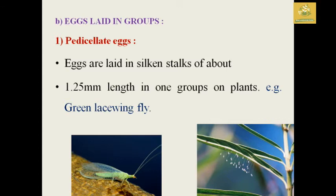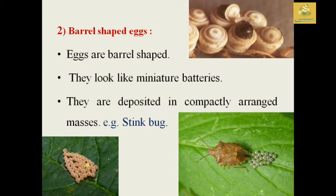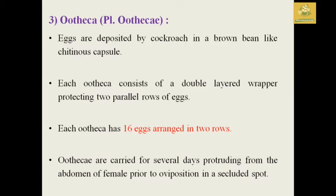Among eggs laid in groups, we have pedicellate eggs, which are laid on a silk stalk of about 1.25 mm on the surface of leaves — for example, the green lacewing fly. Barrel-shaped eggs are barrel-shaped and form miniature batteries on the surface of leaves, deposited in compactly arranged masses — for example, the stink bug.